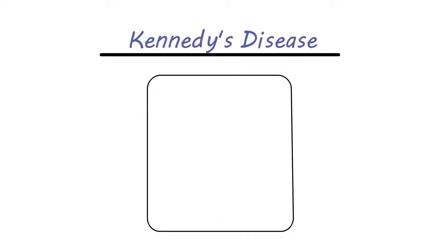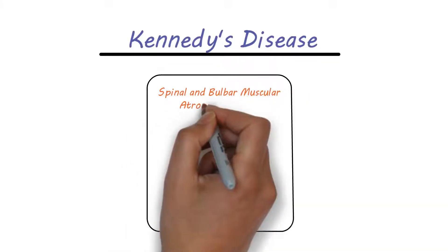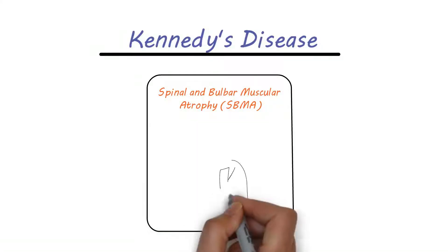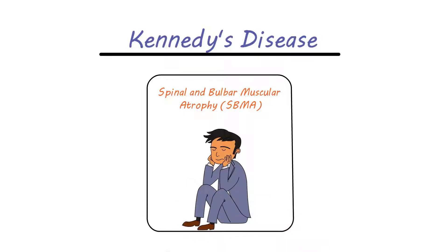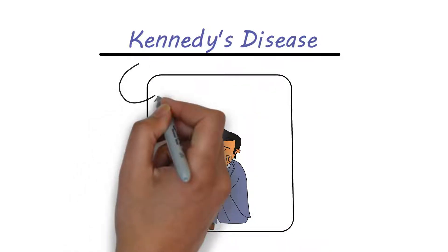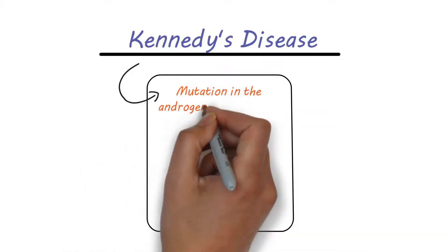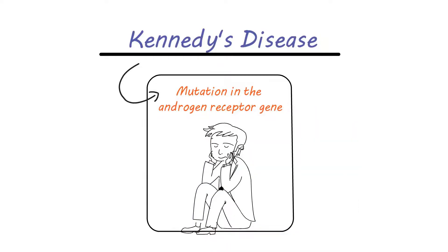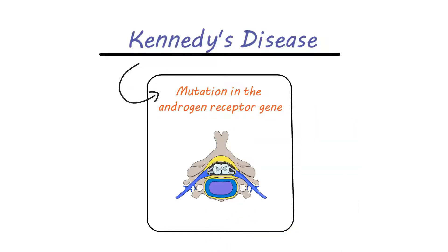Kennedy's disease, also known as Spinal and Bulbar Muscular Atrophy, SBMA, is a genetic disorder that primarily affects men. Kennedy's disease is caused by a mutation in the androgen receptor gene, leading to degeneration of the lower motor neurons in the spinal cord.